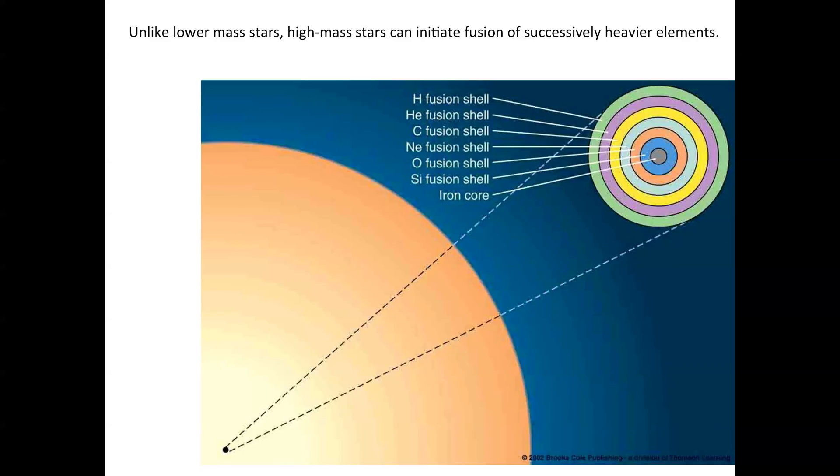Each of these shells will be fusing, successively consuming a bit of what's inside of them as you go out, and then the larger quiescent envelope of the star surrounds that.